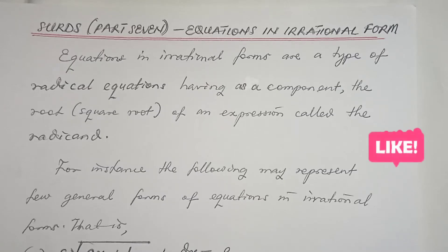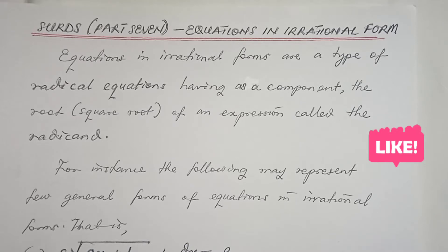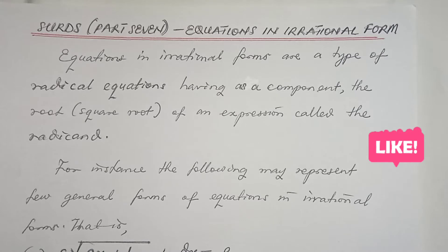Welcome to GER of Mathematics and Statistics lessons. Today we are going to be talking about Surds Part 7, in which case we'll be considering equations in irrational forms. They are simply a type of radical equations having as a component the root, or in particular the square root, of an expression called the radical.